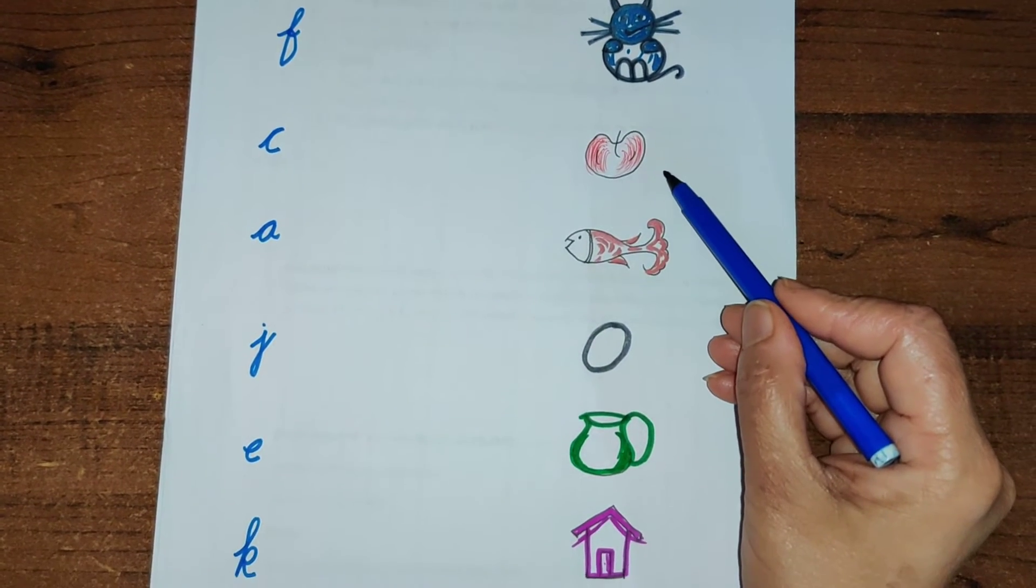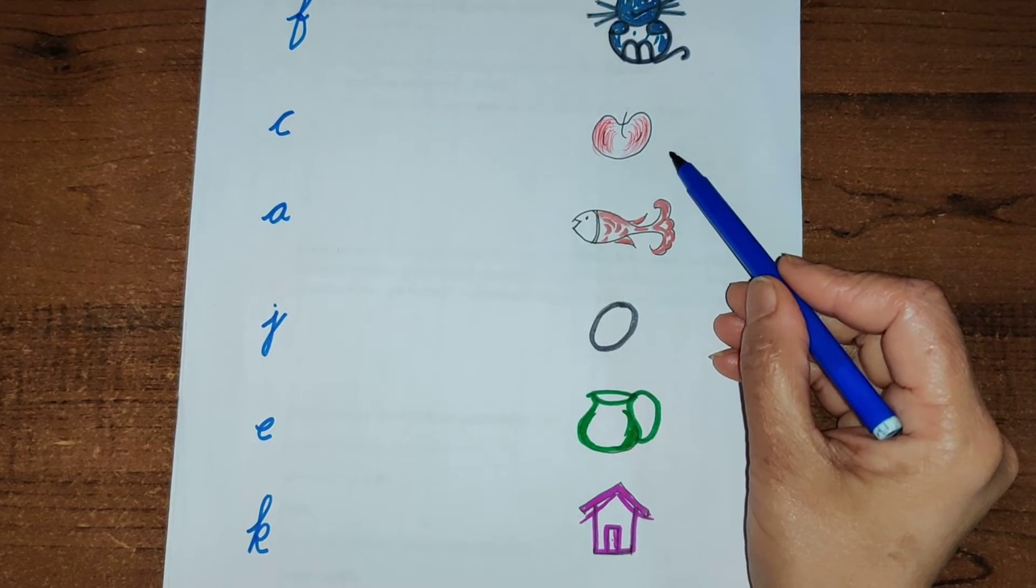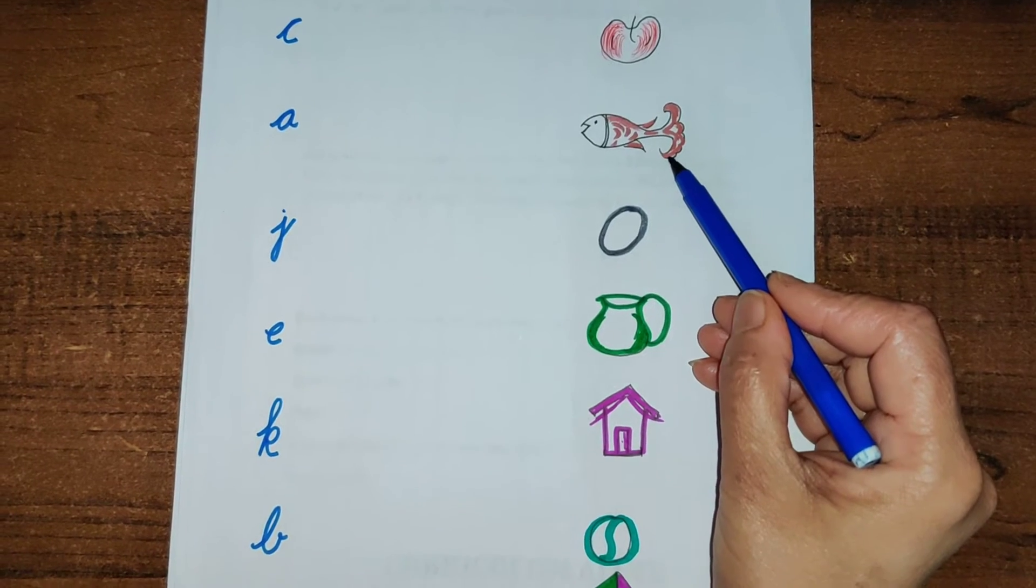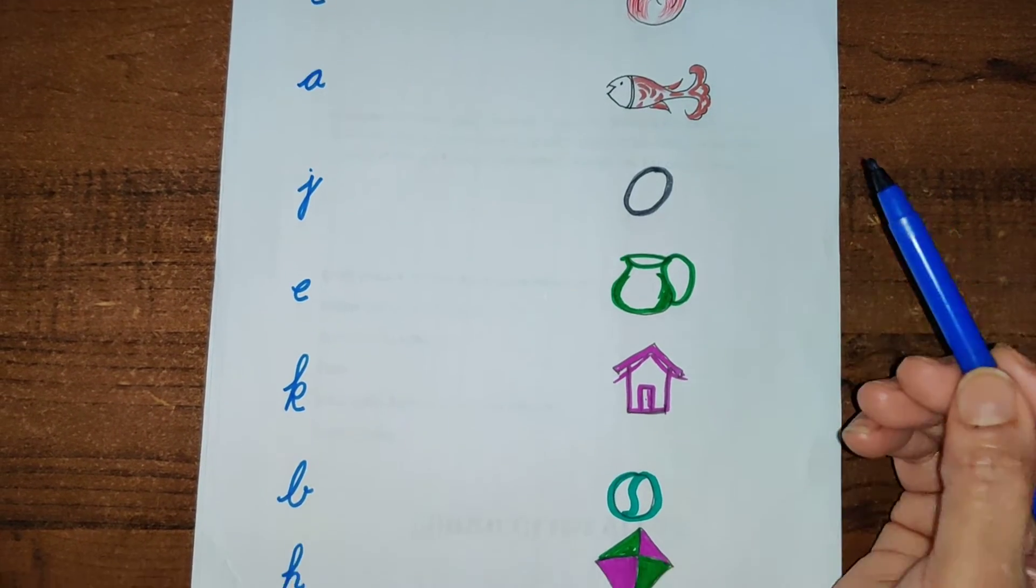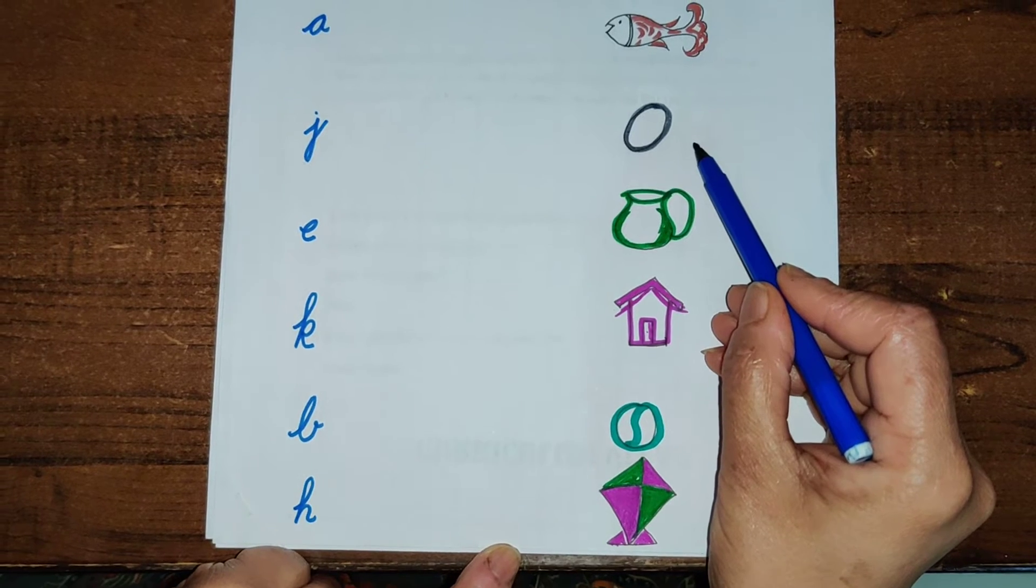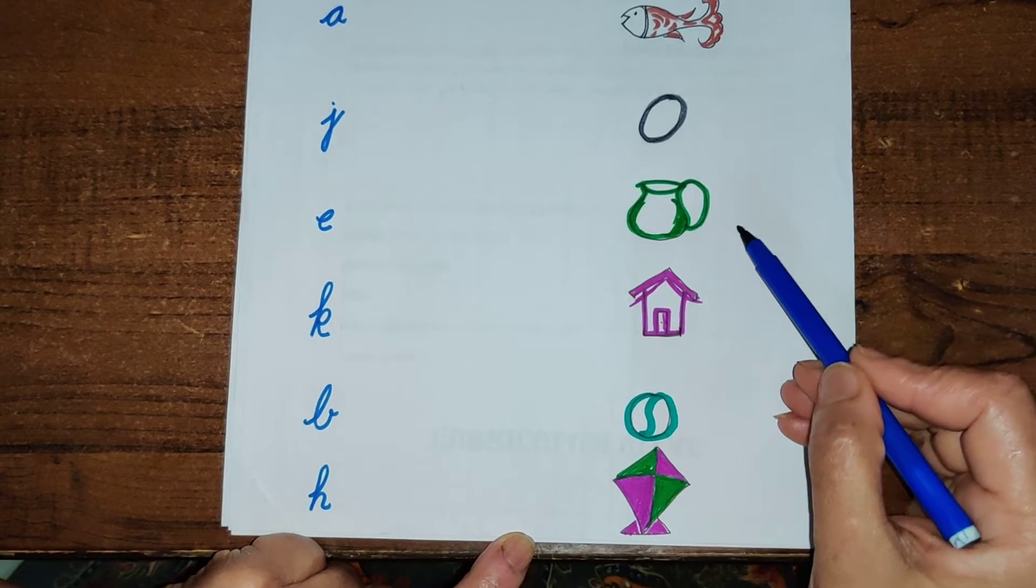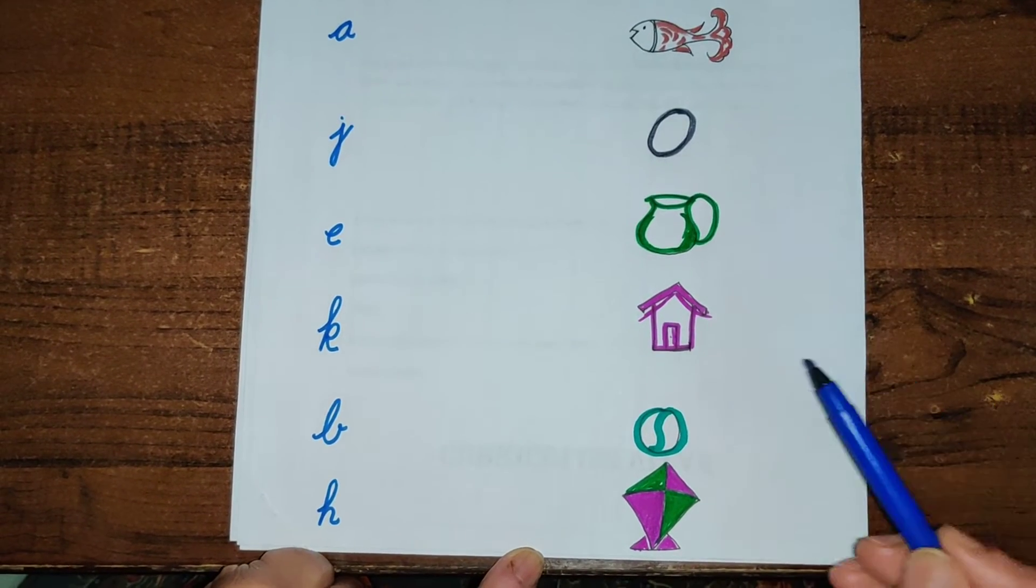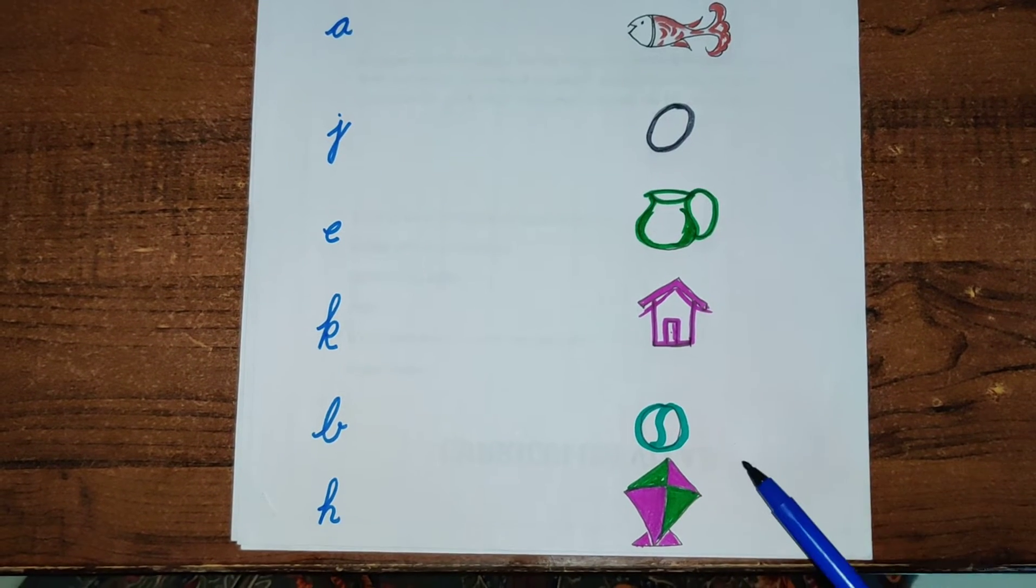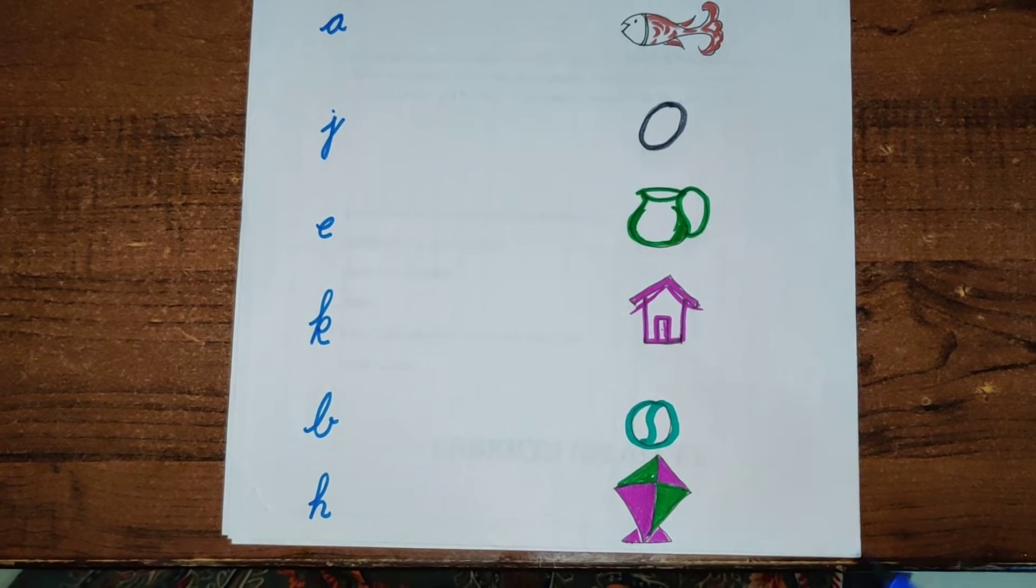And it is an apple, it is a fish, it is an egg, a jug, a hut, a ball, a kite.